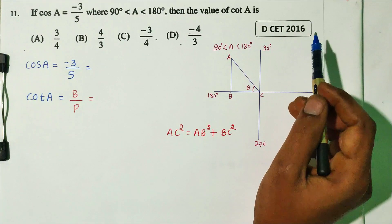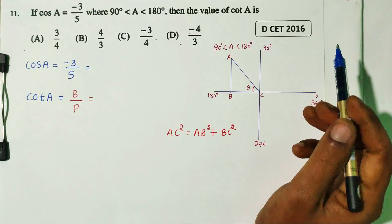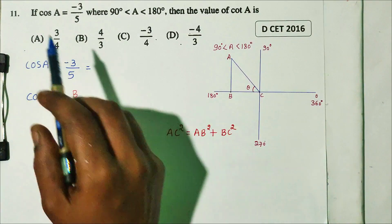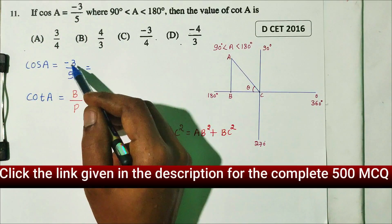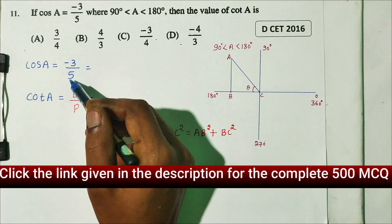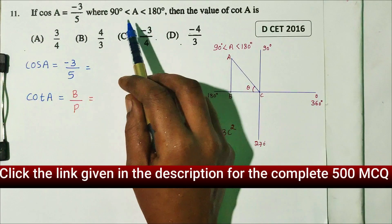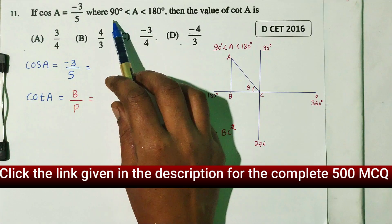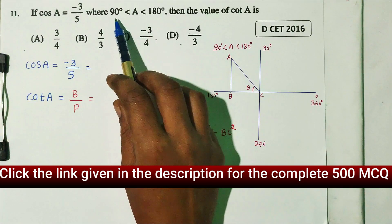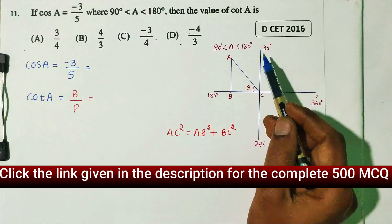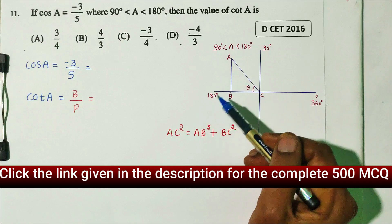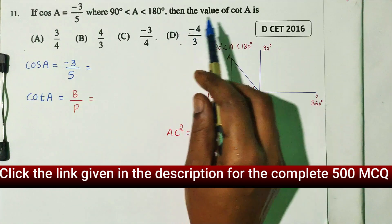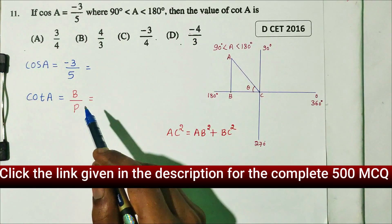This is a DCT 2016 question. The angle A is within 90 to 180 degrees — this is the second quadrant. The value of cot A will be determined.